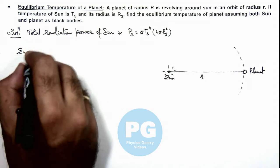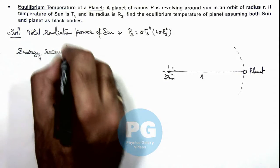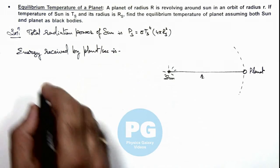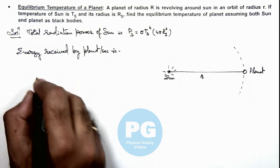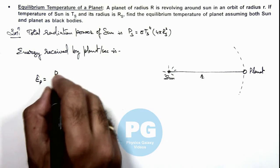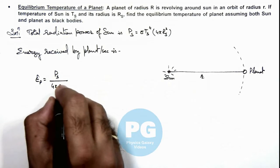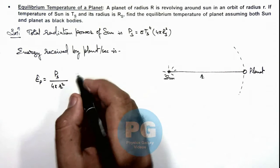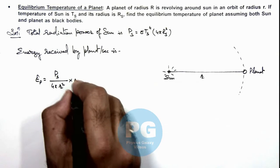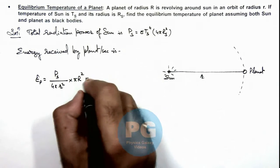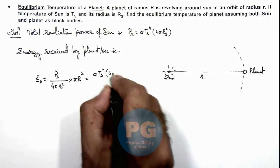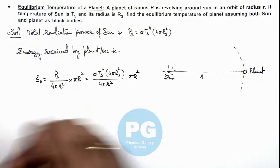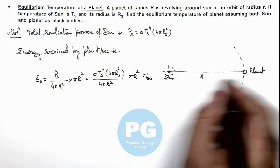So here we can directly write the energy received by the planet per second. We write Ep, which equals Ps — the power radiated by the sun — divided by 4 pi R squared, which is the intensity of solar radiation falling on the planet, multiplied by the cross-sectional area of the planet, which is pi r squared. Substituting the value of Ps gives sigma Ts to the power 4 times 4 pi Rs squared, divided by 4 pi R squared, multiplied by pi r squared. This is the energy received by the planet in joules per second.